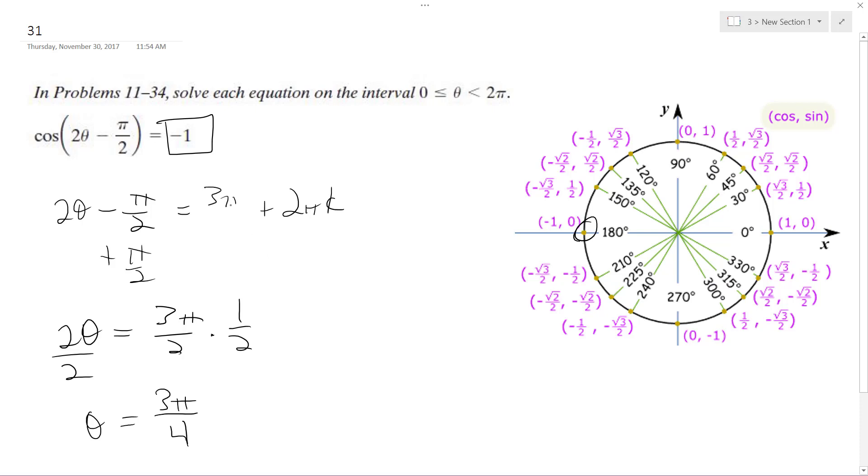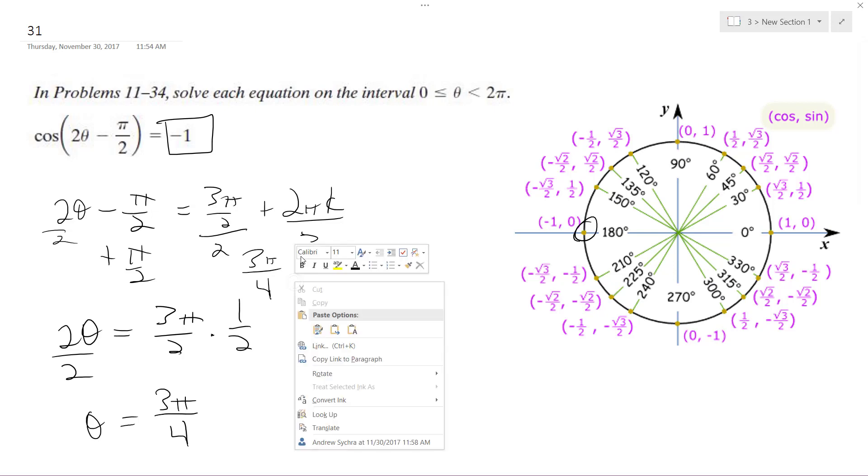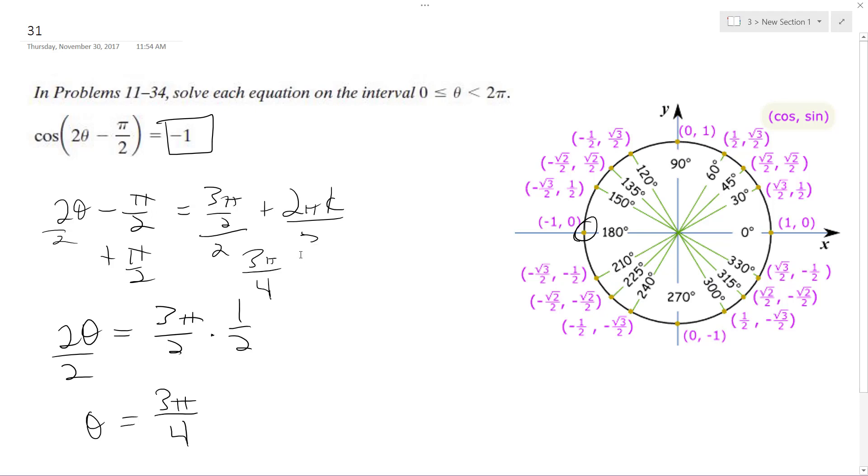3 pi over 2, then divide by 2. So I get 3 pi over 4, plus pi k.